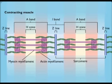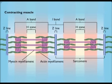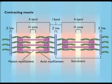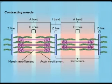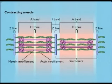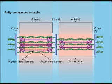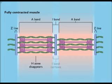During contraction, the actin and myosin myofilaments interact. The actins are pulled toward the center of each myosin myofilament. As a result, the sarcomeres shorten. In the fully contracted muscle, the ends of the actin myofilaments overlap, the H-zones disappear, and the I-band becomes very narrow.